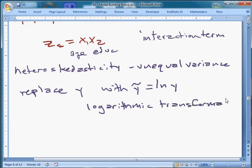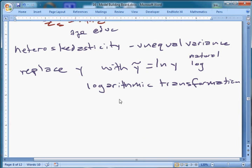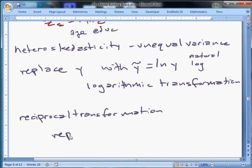One thing we just talked about is the problem of heteroscedasticity, which is a fancy name from Greek roots for unequal variance, meaning that our error terms are not the same. One way to solve this problem is to replace y in our model with y tilde, which is log of y. That can a lot of times solve the problem. It's called a logarithmic transformation.